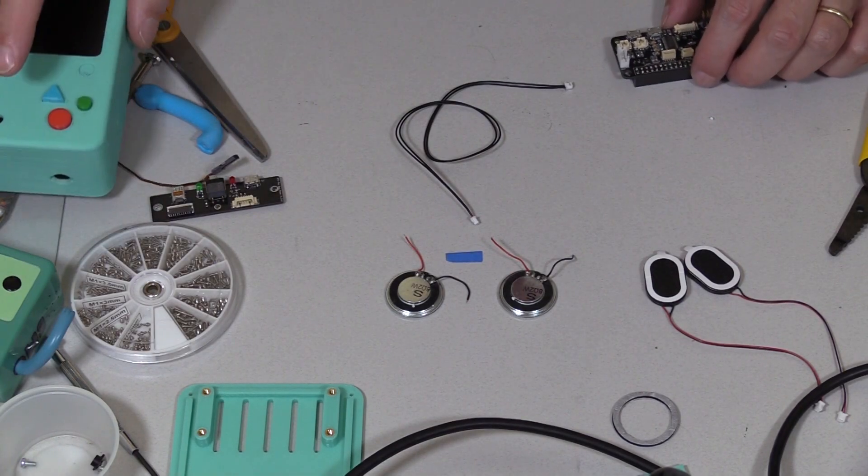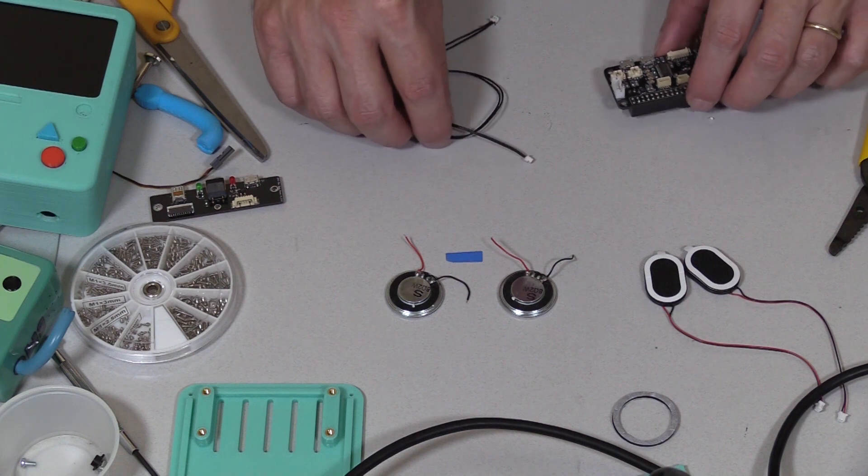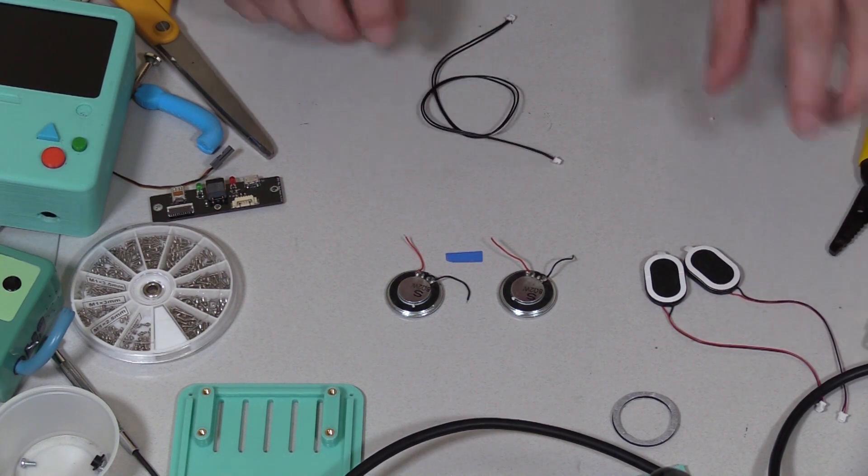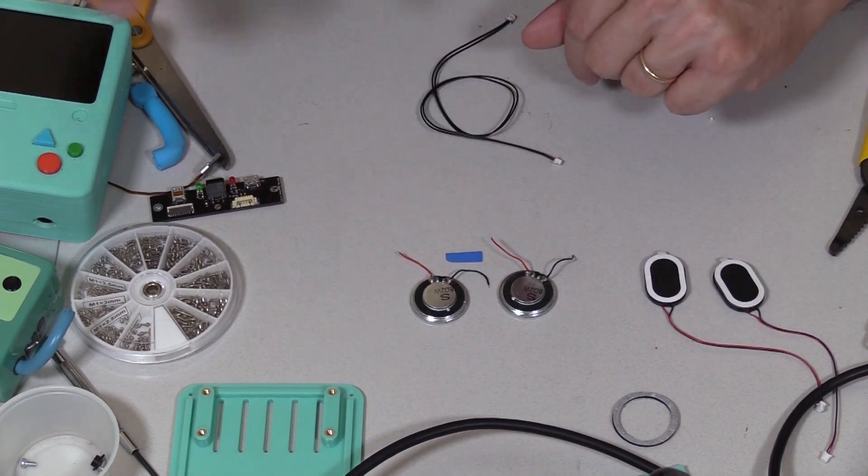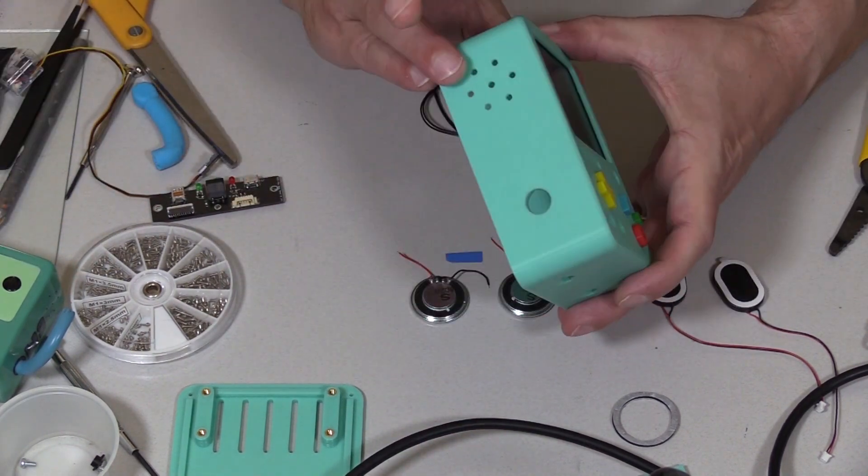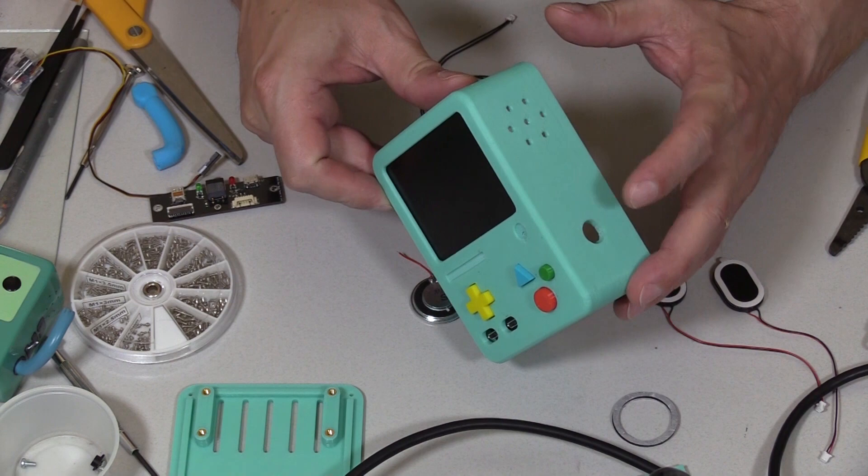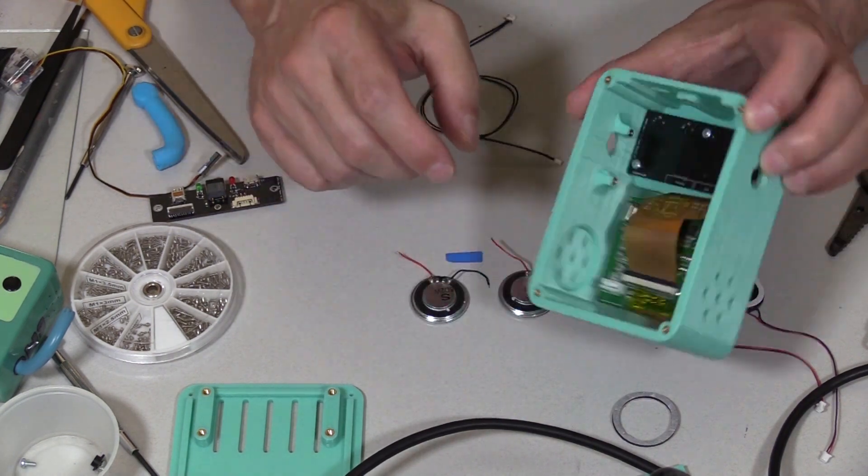Okay, before we put everything together completely, we need to talk a bit about the audio system, which is the speakers. Mimo has two speakers for the ear holes right here, and inside there's an indentation.